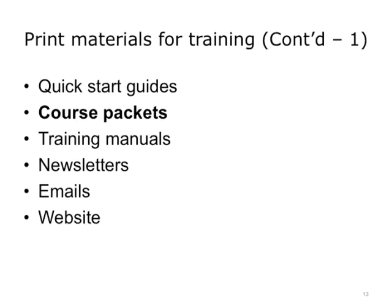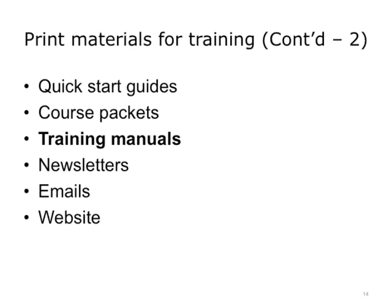Most of these can be developed in a word processing application. In addition to giving the students printed copies during the training course, you may post an Acrobat file of the document online. A training manual is usually a very detailed instruction book describing how to use a specific application. Some uses of training manuals include: trainees can use the manual for reviewing the subject after training, it lets the trainee concentrate and partake in the training instead of taking detailed notes, and it can serve as a reference document in the workplace. Self-paced guides are designed for trainees to work through on their own, and reference manuals contain detailed information on processes and procedures.